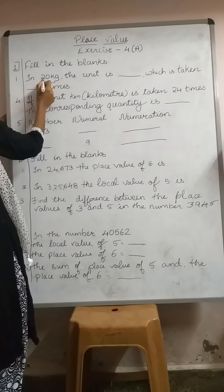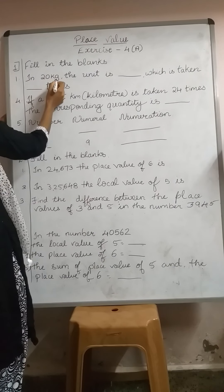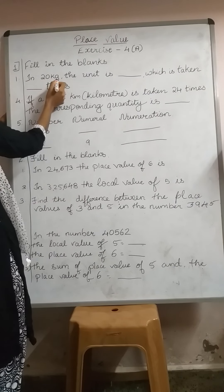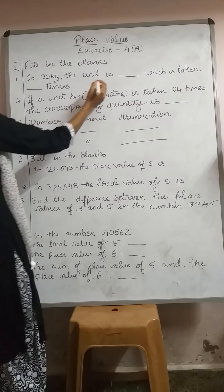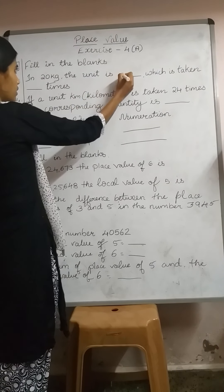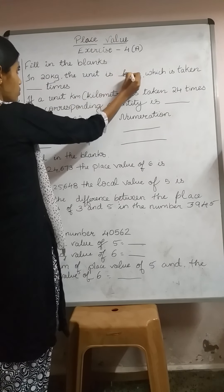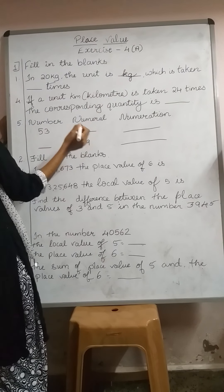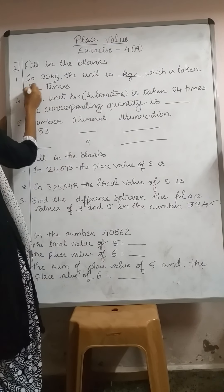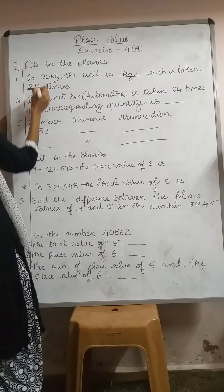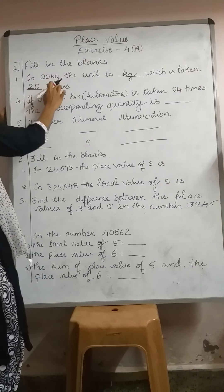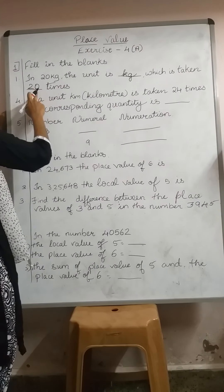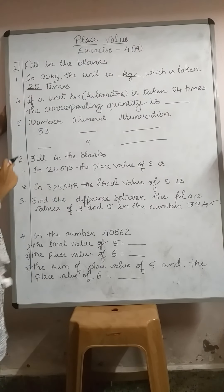What is the unit? 20 is the numeral; kg is the unit. So what do we need to write? Unit is kg. Which is taken how many times? 20 times. Did you understand? The unit is kg, which is taken 20 times.